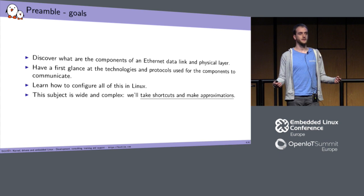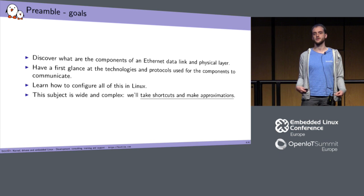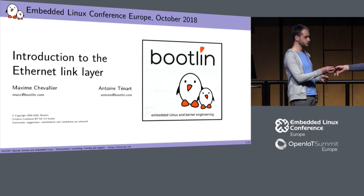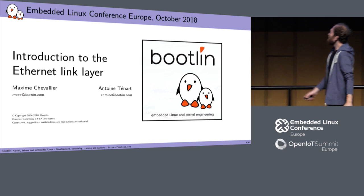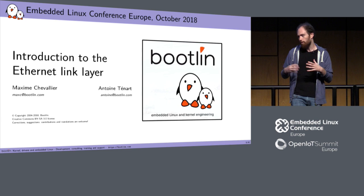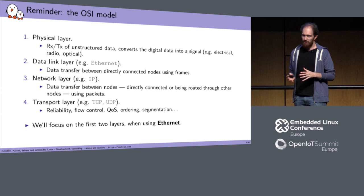Ethernet has been here for more than 30 years, so it has evolved and is now a very complex set of specifications. We will take some shortcuts to make this more understandable. We'll begin with an introduction to the Ethernet link layer — getting a definition of what we call the Ethernet link layer, what problem it will solve, and what it will look like.